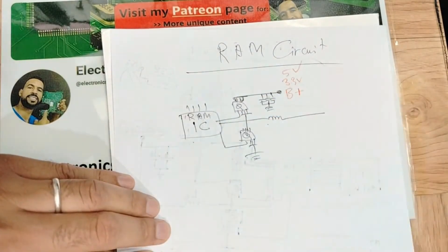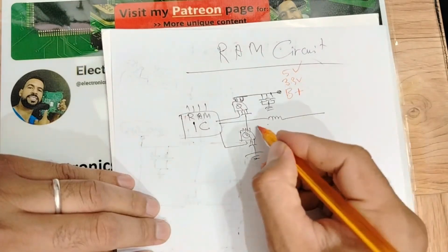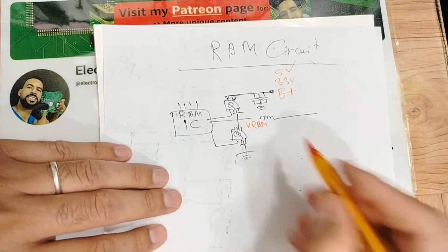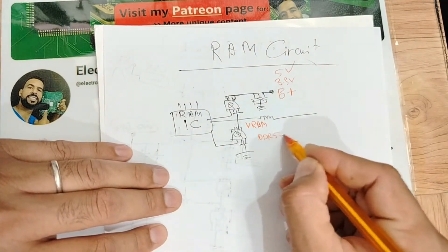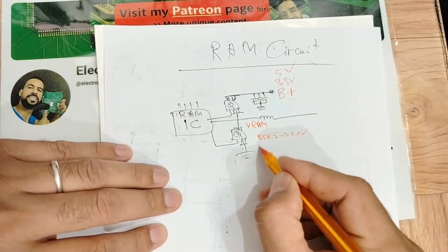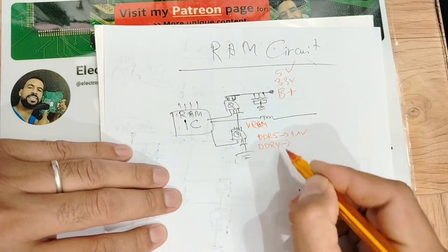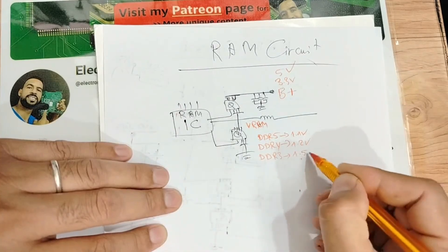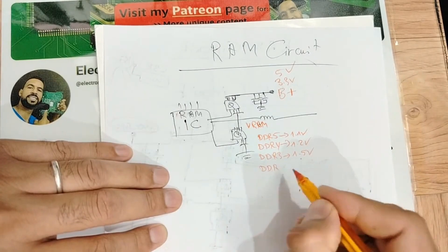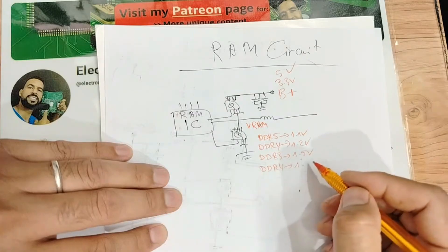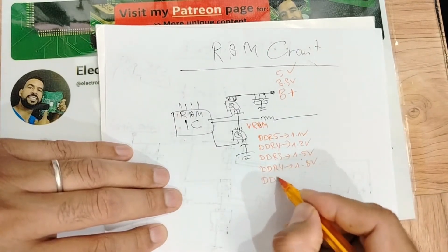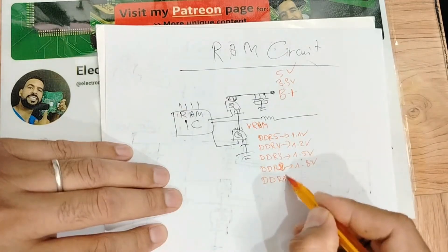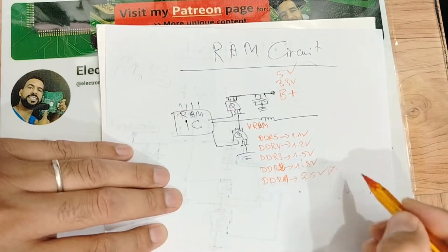So here we will get the voltage for the RAM, the VRAM, depending on the type of RAM. If the RAM is DDR5, the voltage will be 1.1 volts. If the RAM is DDR4, the voltage will be 1.2 volts. If the RAM is DDR3, the voltage will be 1.5 volts.